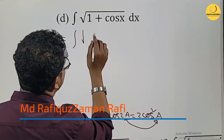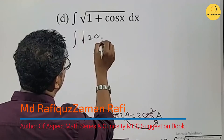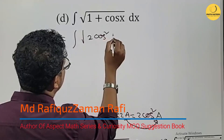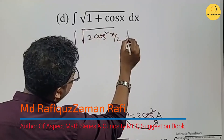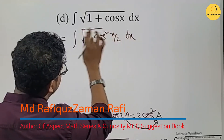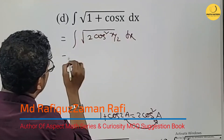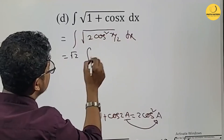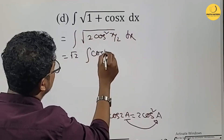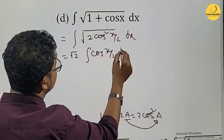So, 1 plus cos x equals 2 cos² of (x/2), and then we take the square root — root 2 times cos(x/2). So in the integration of cos x, we proceed with root 2 times dx.